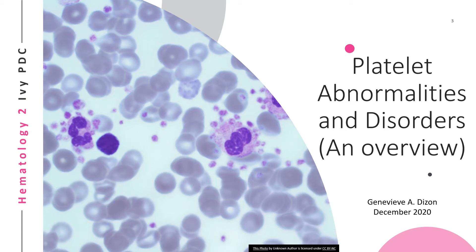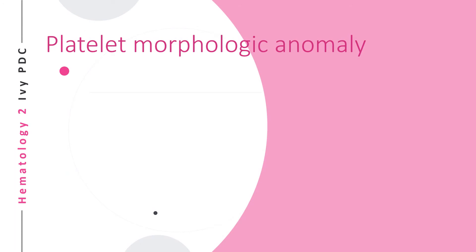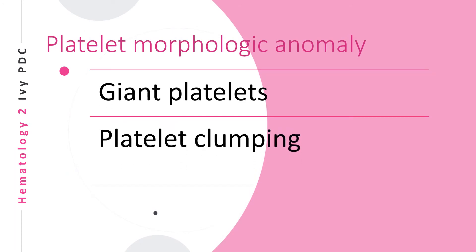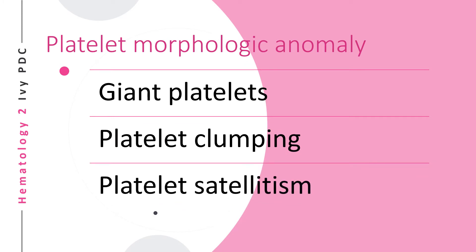There are three different morphologic anomalies related to platelets: giant platelets, platelet clumping, and platelet satellitism.